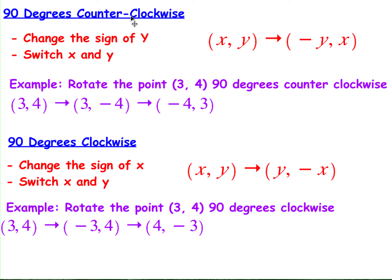If I'm rotating a figure 90 degrees counterclockwise, all I do is I change the sign of my y — so if it's positive, it becomes negative; if it was negative, it becomes positive — and then I switch around the x and y. So if I have a point (x, y), I change the sign of my y and then swap their spots. Here's an example: if I want to rotate the point (3, 4) 90 degrees counterclockwise, first I change the sign of my y — positive 4 becomes negative 4 — and then I swap the x and y to get (-4, 3). That would be my new point. This is really the main purpose of doing this: when we don't have a piece of paper we can just rotate around to see what our new image is.